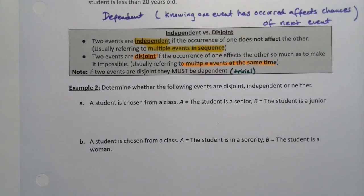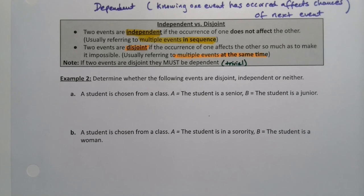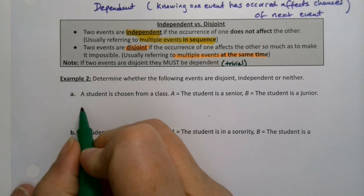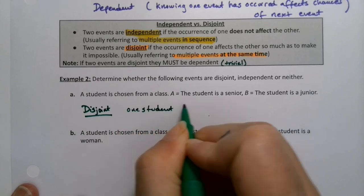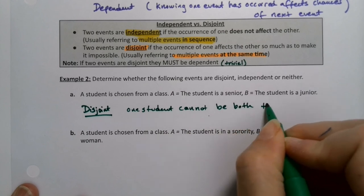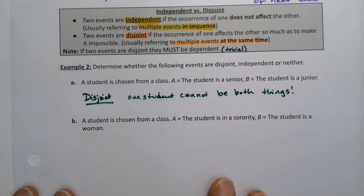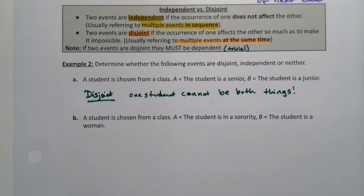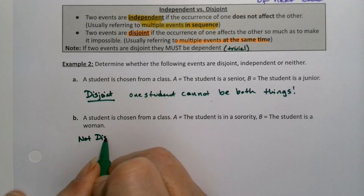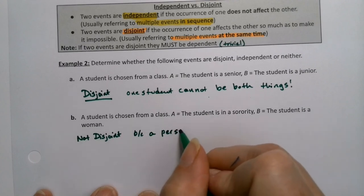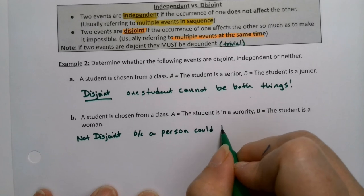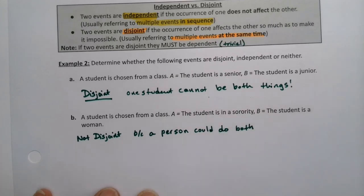Let's determine whether these events are disjoint, independent, or neither. First: a student is chosen from the class, and event A is the student is a senior, and event B is the student is a junior. They cannot be both at the same time, so this is disjoint — one student cannot be both a senior and a junior.